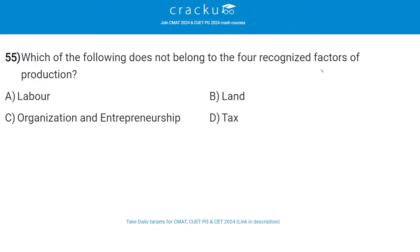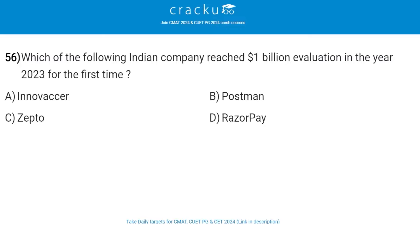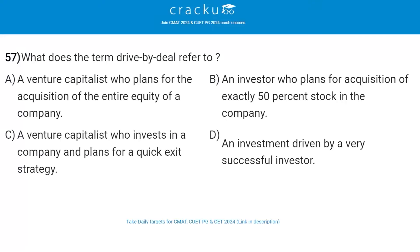Which of the following does not belong to the four recognized factors of production? The answer is tax. Which of the following Indian company reached 1 billion valuation in the year 2023 for the first time? The answer is Zepto. What does the term drive-by deal refer to? The answer is a venture capitalist who invests in a company and plans for a quick exit strategy.